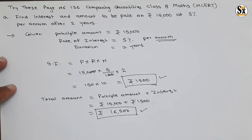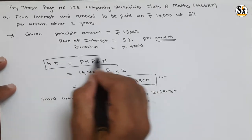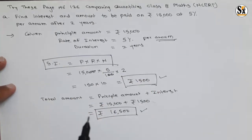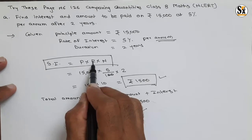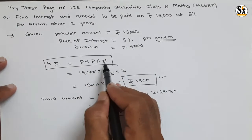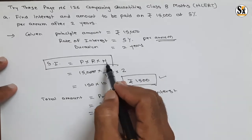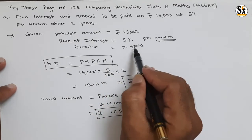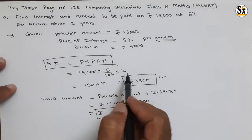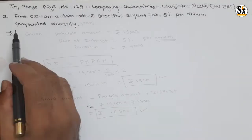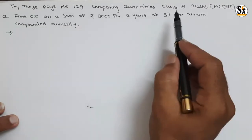So these are the two answers. Always remember: the formula for simple interest is P × R × N. If the rate of interest is given per annum, calculate the total duration in annums — two years means N equals two. Now see the question under 'Try This' section, page number 129, Comparing Quantities, Class 8 Mathematics.